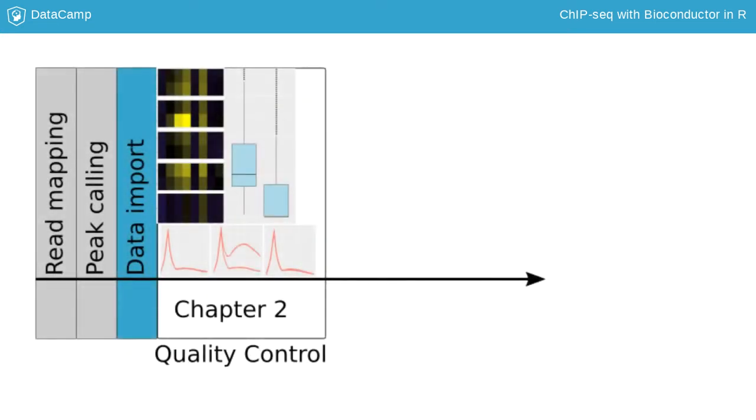Before starting the main analysis, it is important to ensure that the data is of good quality and to deal with any apparent problems. You will learn about quality control procedures in the second part of Chapter 2.